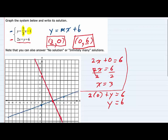Since we're looking for the solution, the solution is where the two lines cross. And in this case, it's at this point right here, and that point is at three, zero.